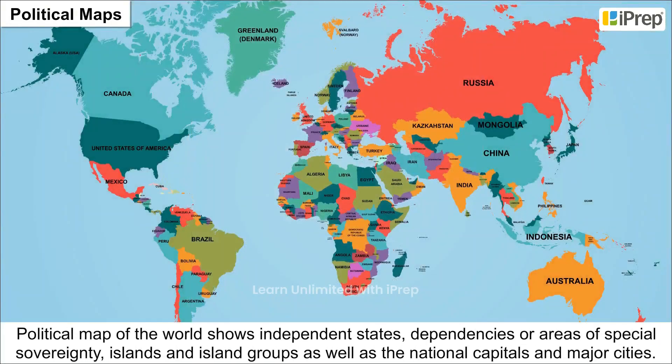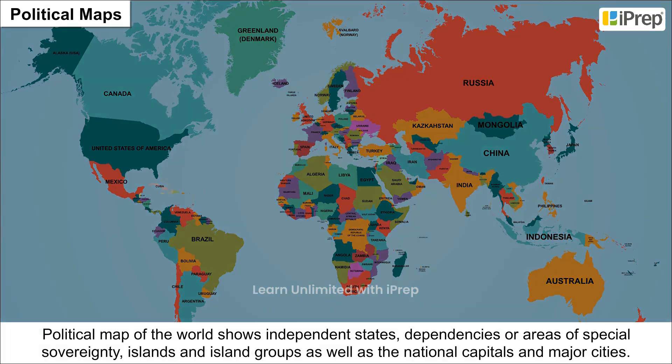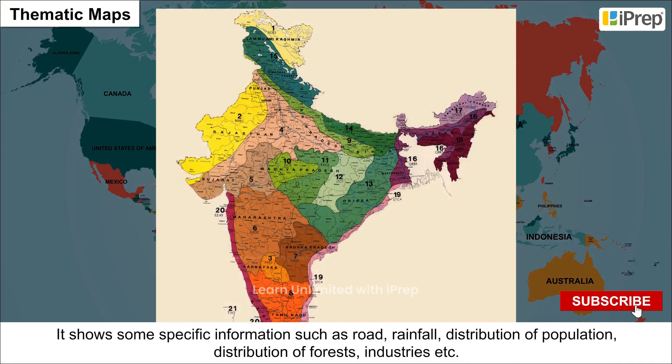The Political Map of the World shows independent states, dependencies or areas of special sovereignty, islands and island groups, as well as the national capitals and major cities.